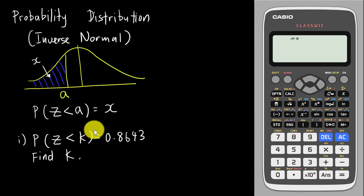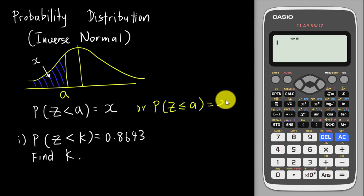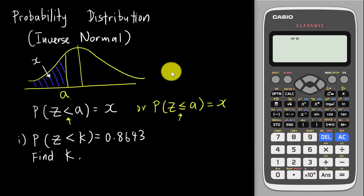But if you have the latest Casio 570 EX you can easily solve this. Before I teach you how, you need to understand the calculator's preset setting. This calculator is preset for P(Z < a) = x, where x is the probability or area of the bell shape diagram. In this topic, less than and less than or equal are the same — you don't need to worry about the equal sign, but the inequality must always be less than or less than or equal.